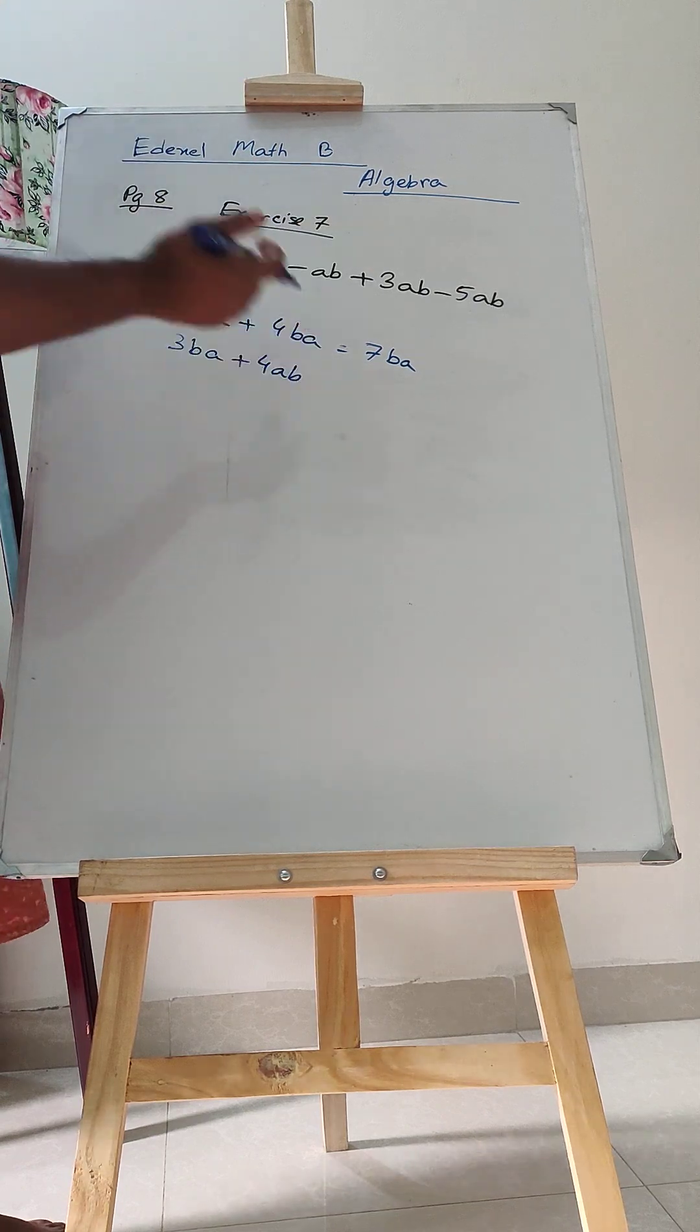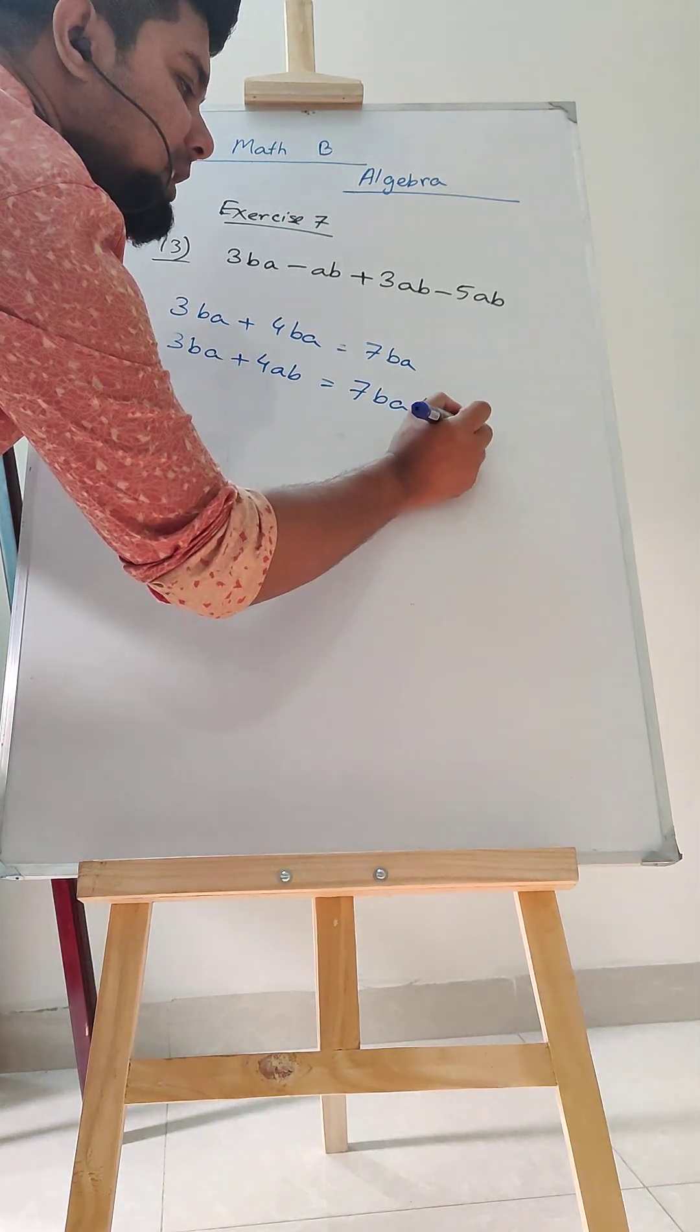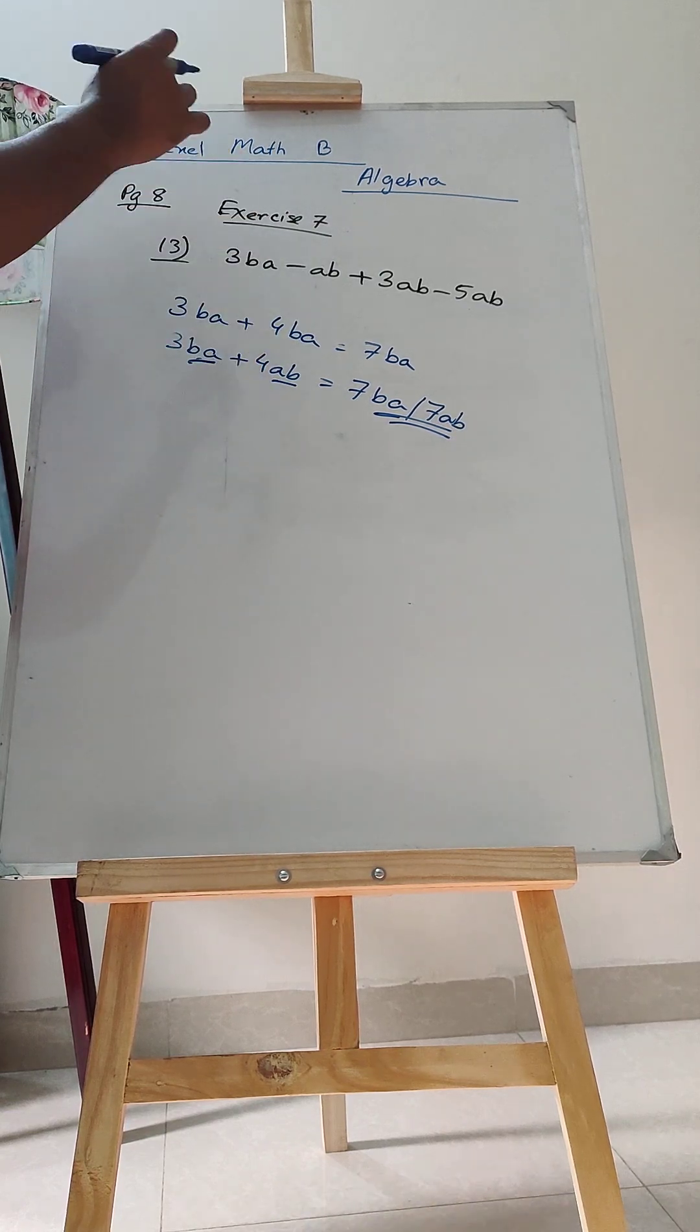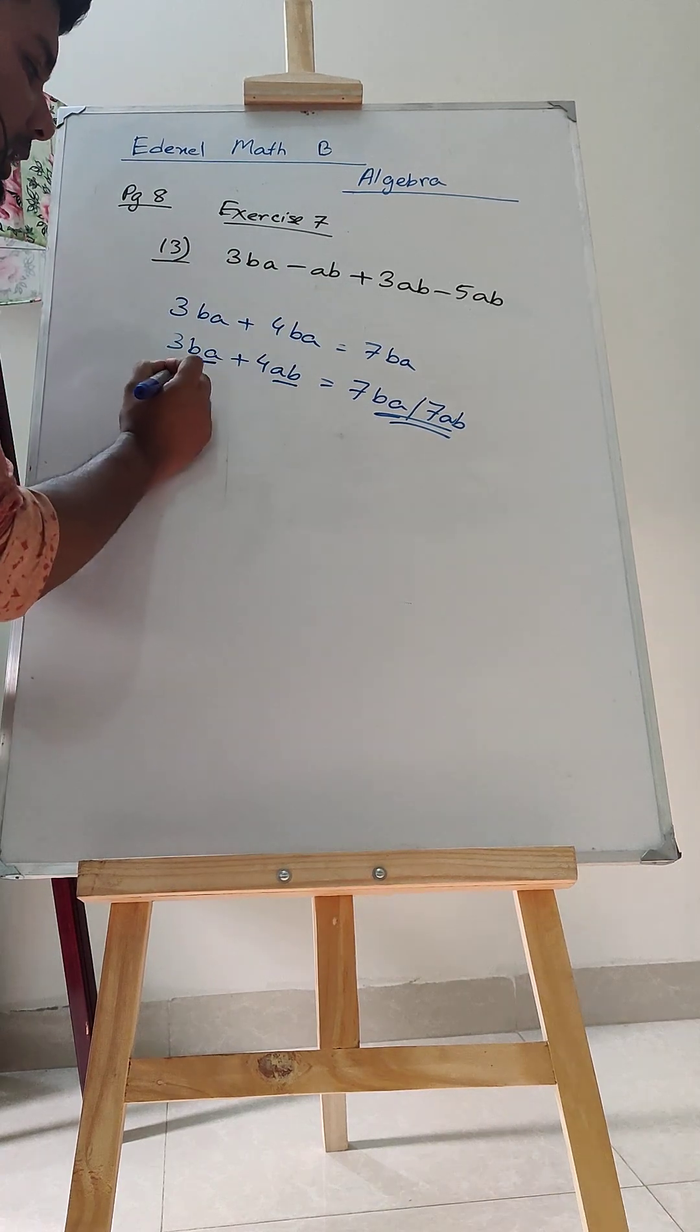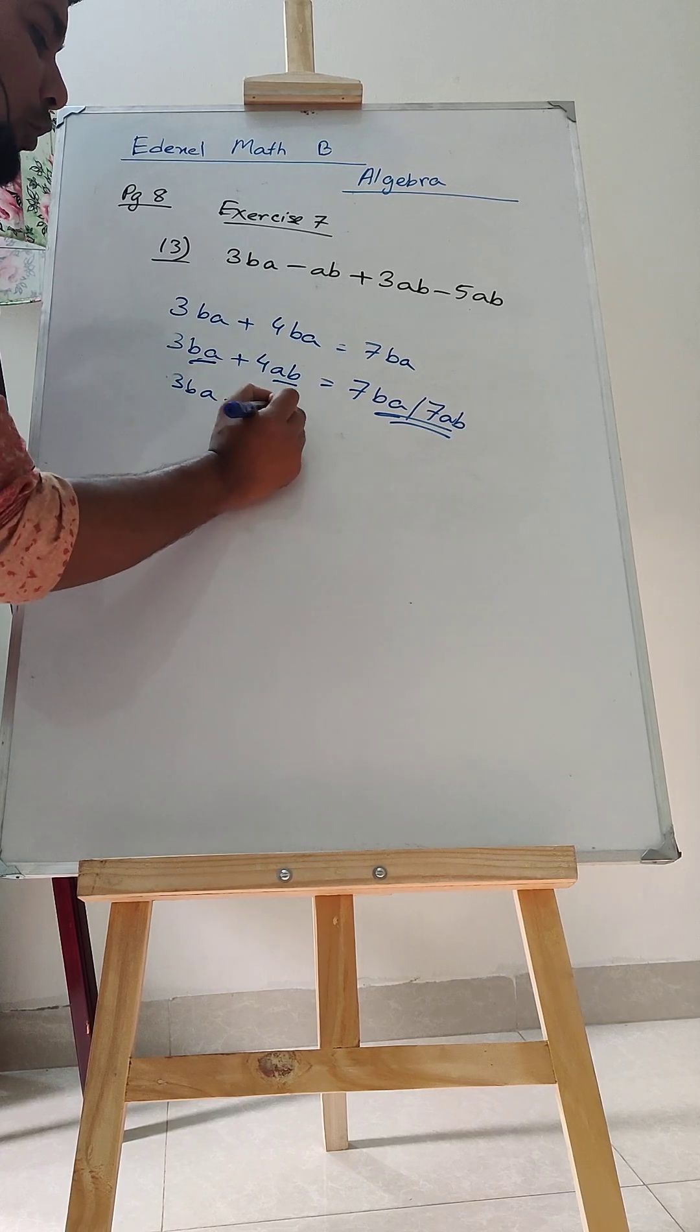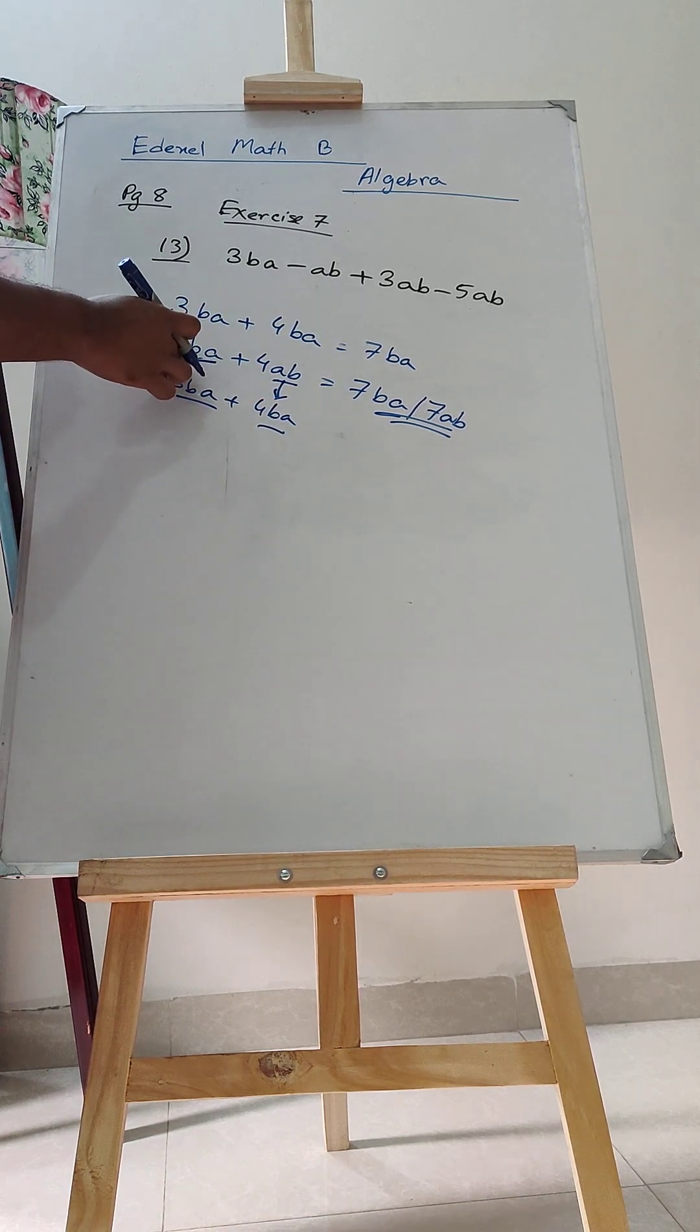The answer will be same. Because whether you write 7BA or 7AB, the answer is same. This AB and BA, ultimately all these variables are of the same value and in multiplication form. Basically, this BA and AB is the same thing. You can write 3BA plus 4BA. Instead of writing BA, you can write AB here.